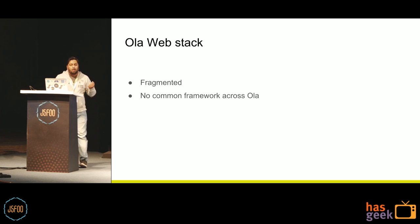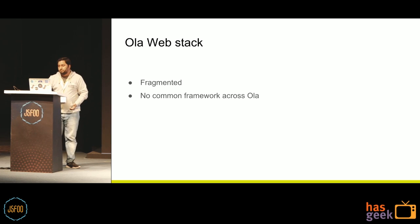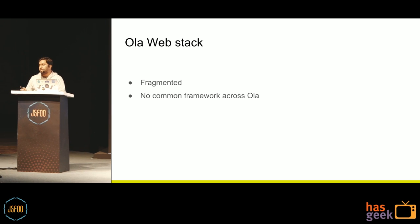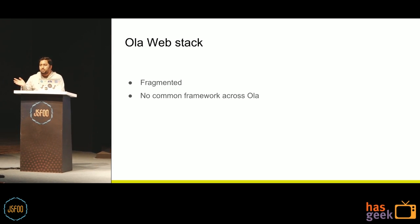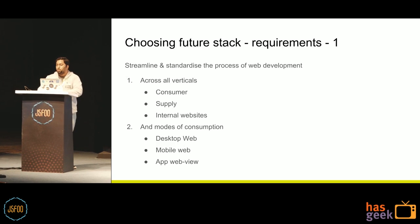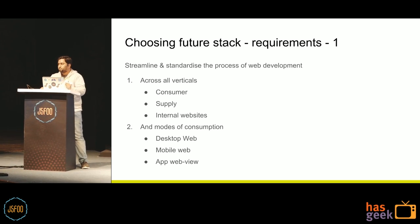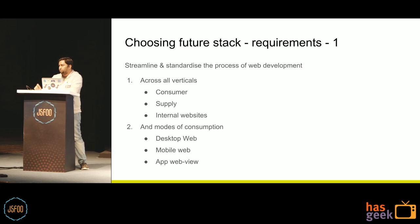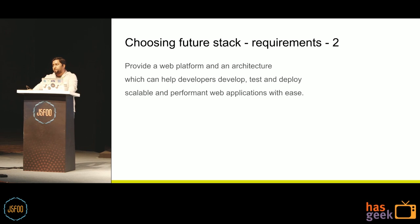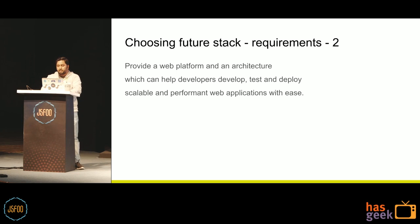We took a look at how our web stack was at Ola and found the frameworks were fragmented — different teams using different frameworks, and even within a given team there were multiple projects using different frameworks. We felt we needed a common framework, an effort to streamline and standardize web development across our consumer vertical, supply vertical, and all internal websites. We also wanted to use the same framework across desktop, mobile, and app web views, and give developers a way to develop, test, and deploy applications at scale without having to go through a framework-selection cycle every time.